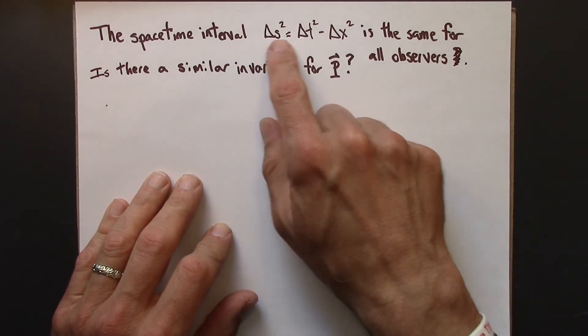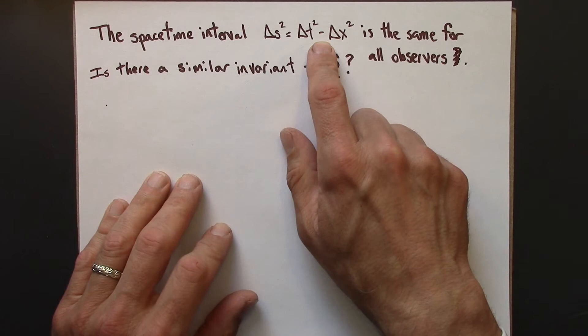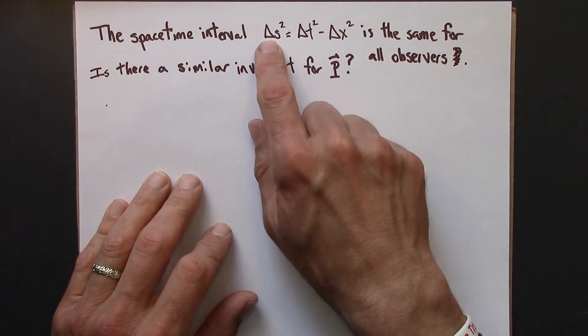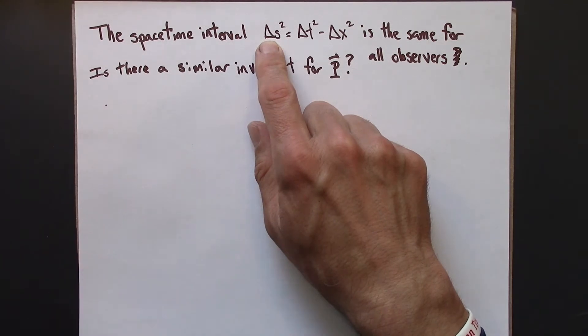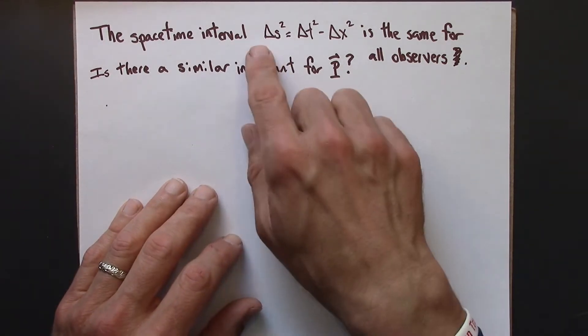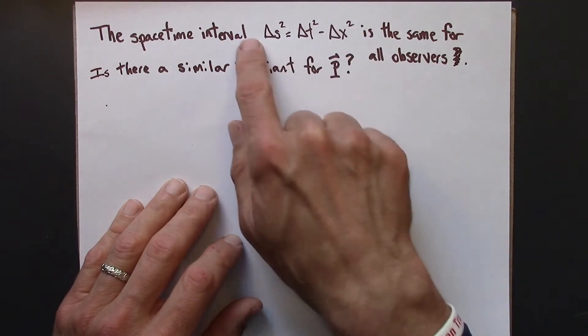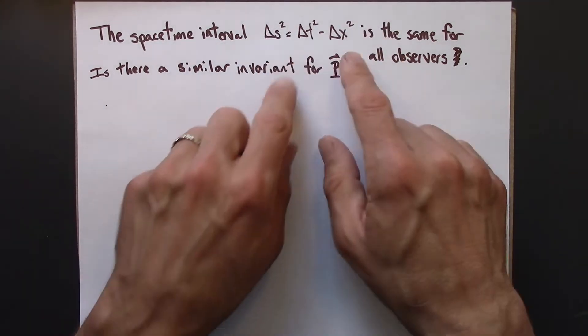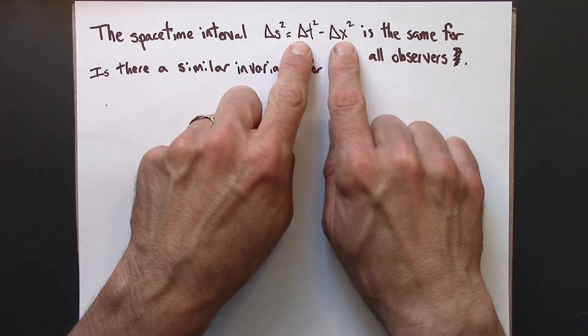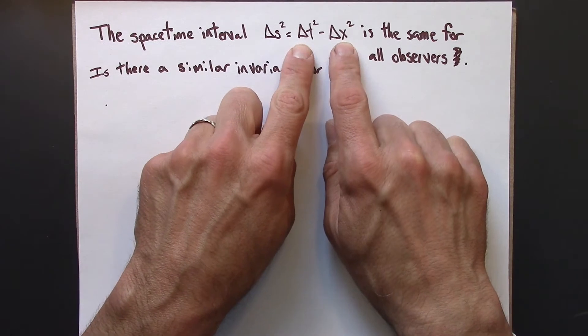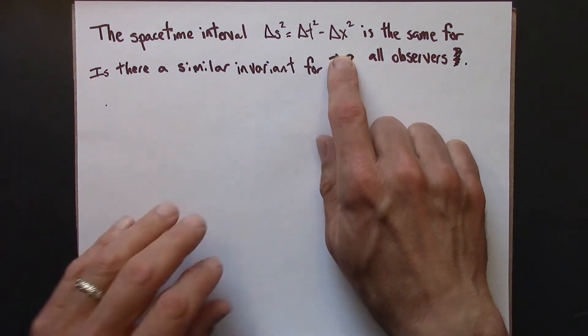Delta t squared minus delta x squared. So we can think about defining this as the time read by a clock, an inertial clock that's present at two events. We can also use algebra to show that just if you take this quantity and you apply the Lorentz transformation to it, you'll end up where you started.